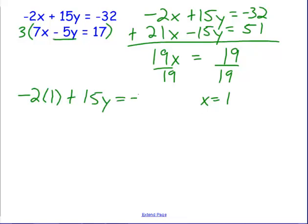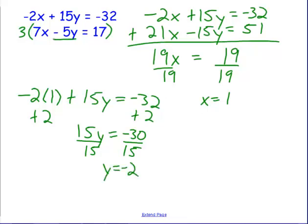Plus 15y equals a negative 32. I would need to add 2 to both sides to try to get y by itself. I have 15y equals a negative 30. And I divide by 15 on both sides and I see that y equals negative 2. And again, I would want to go back and check my ordered pair in both of the original equations to make sure that it works. But you see how it can be done even if they don't have the same or opposite coefficients.